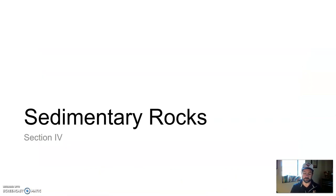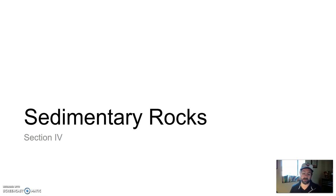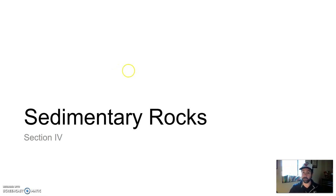So those are depositional environments. We took an existing rock, broke it down through weathering, created sediment, then transported and deposited that material in a specific environment — four environments on land and four on or near the ocean. Now we're going to take those deposited sediments and turn them into sedimentary rocks. I'll see you back here in just a second for section four on sedimentary rocks.